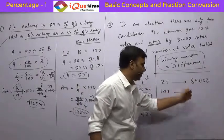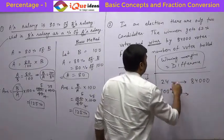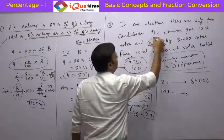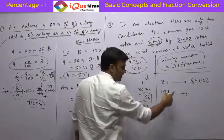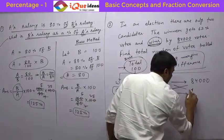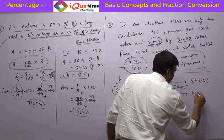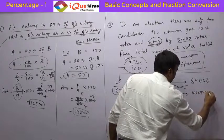So if this 24 is equivalent to 84,000, how much will this 100 be equivalent to? Because the question says very clearly that the winner has won the elections by 84,000. So do this calculation, simple unitary method calculation, cross multiplication. If 24 is 84,000, then 100 will be 100 into 84,000 divided by 24.